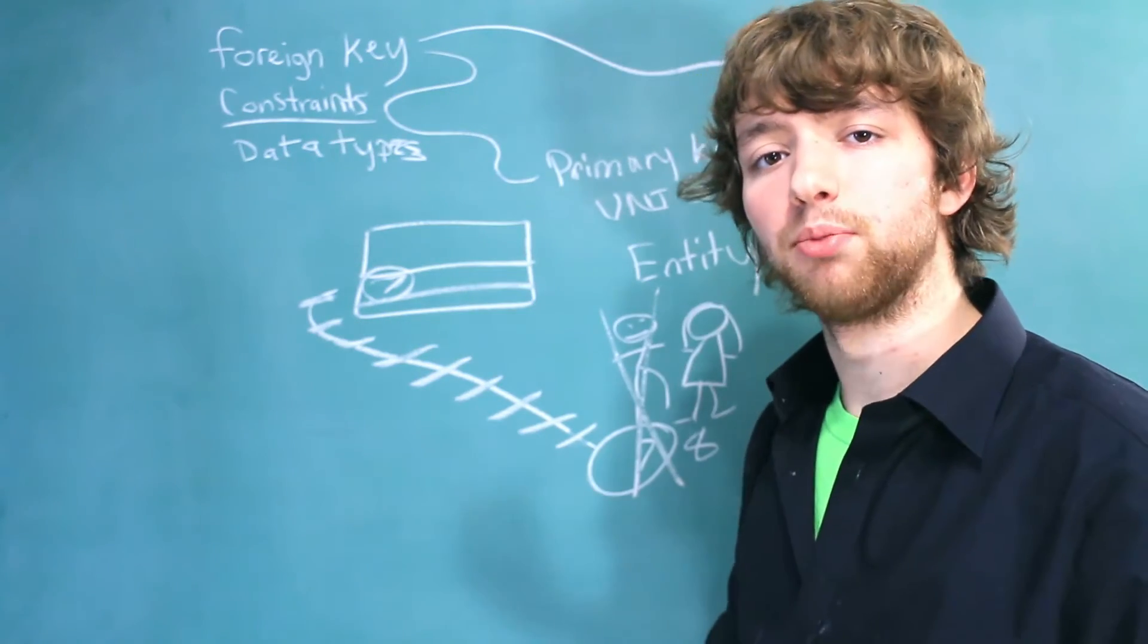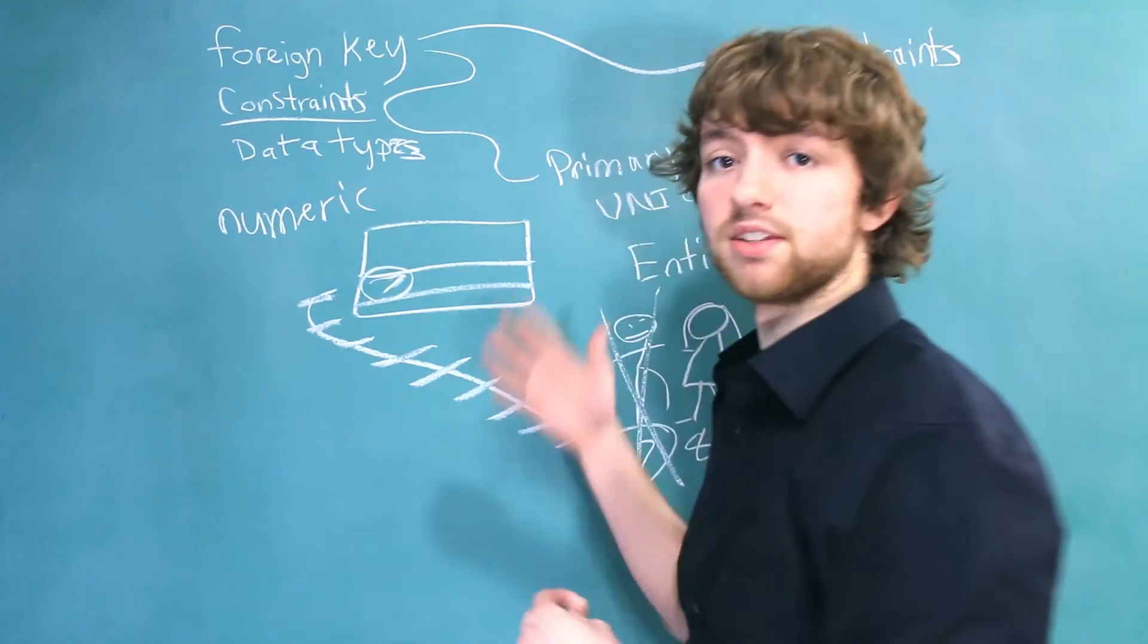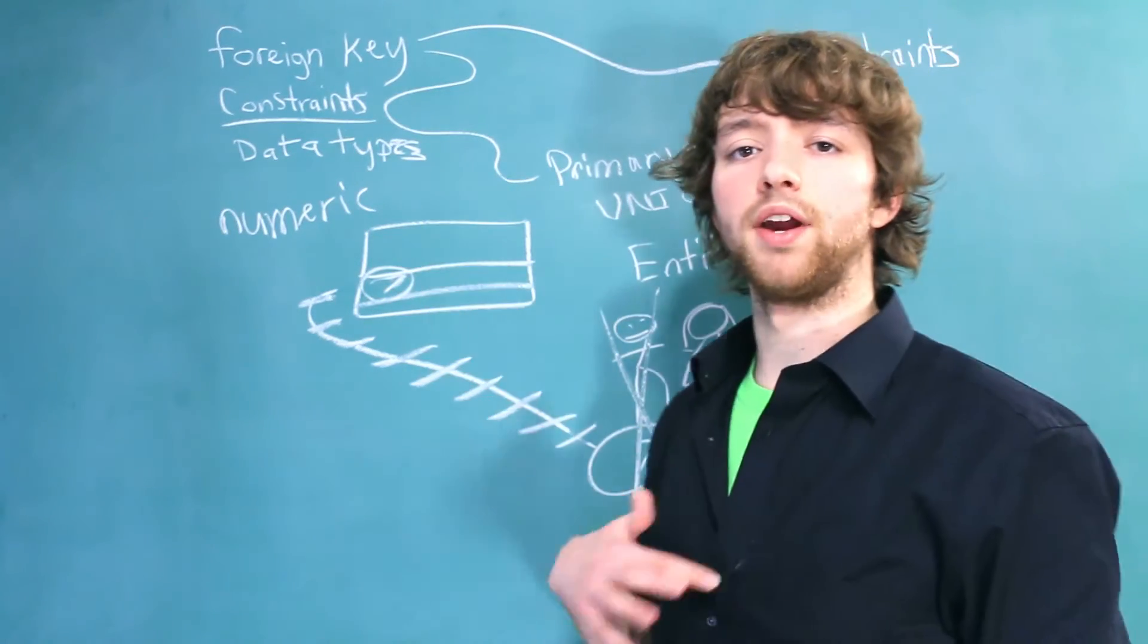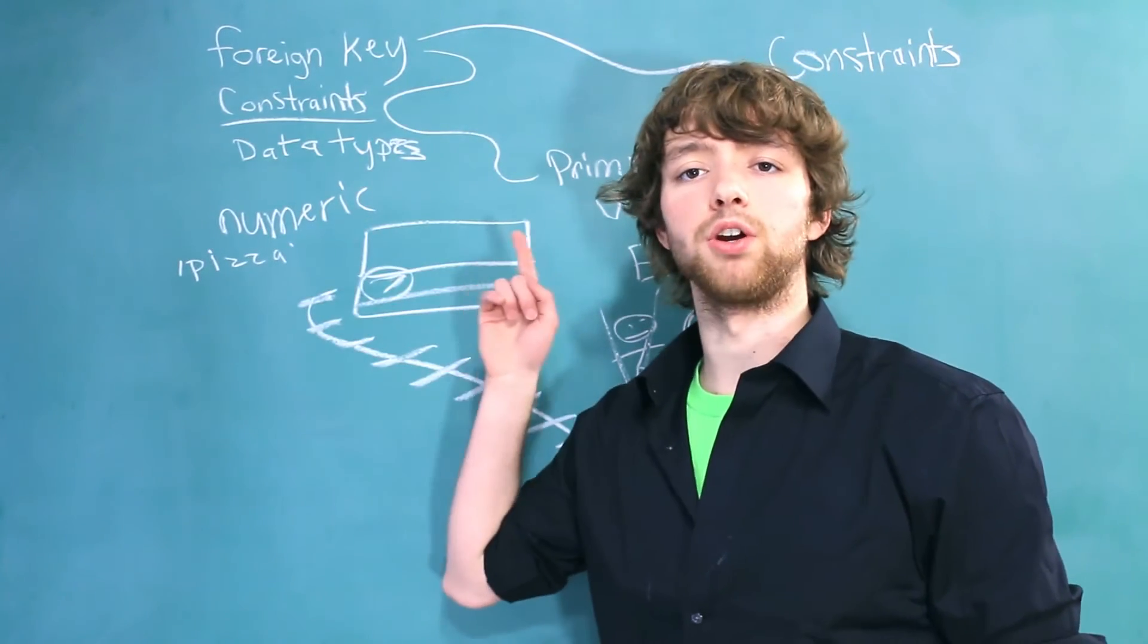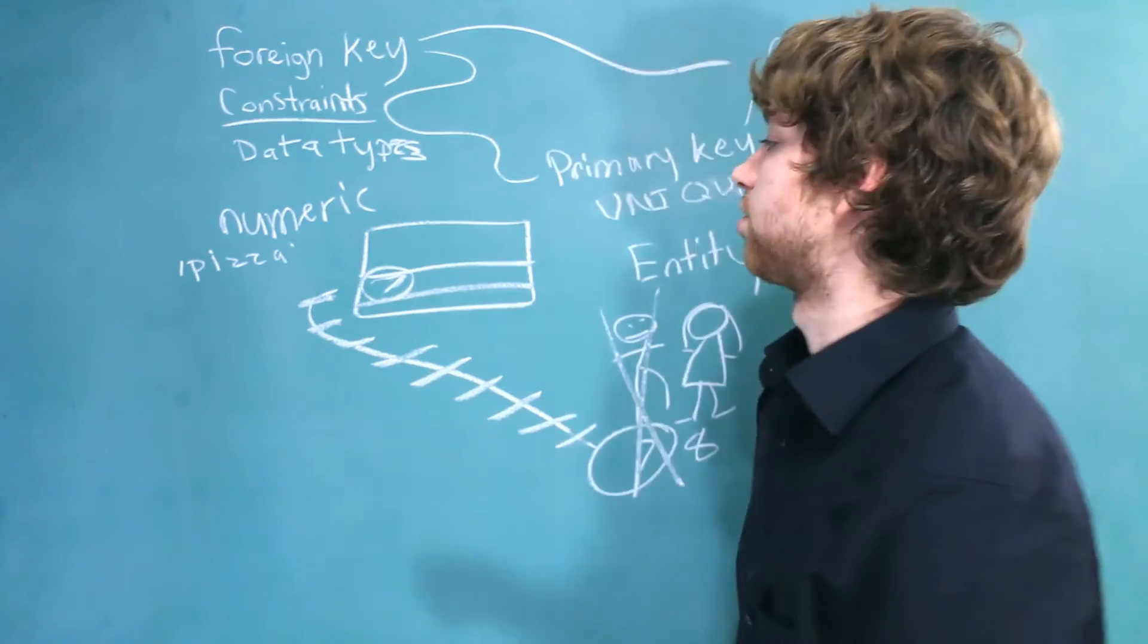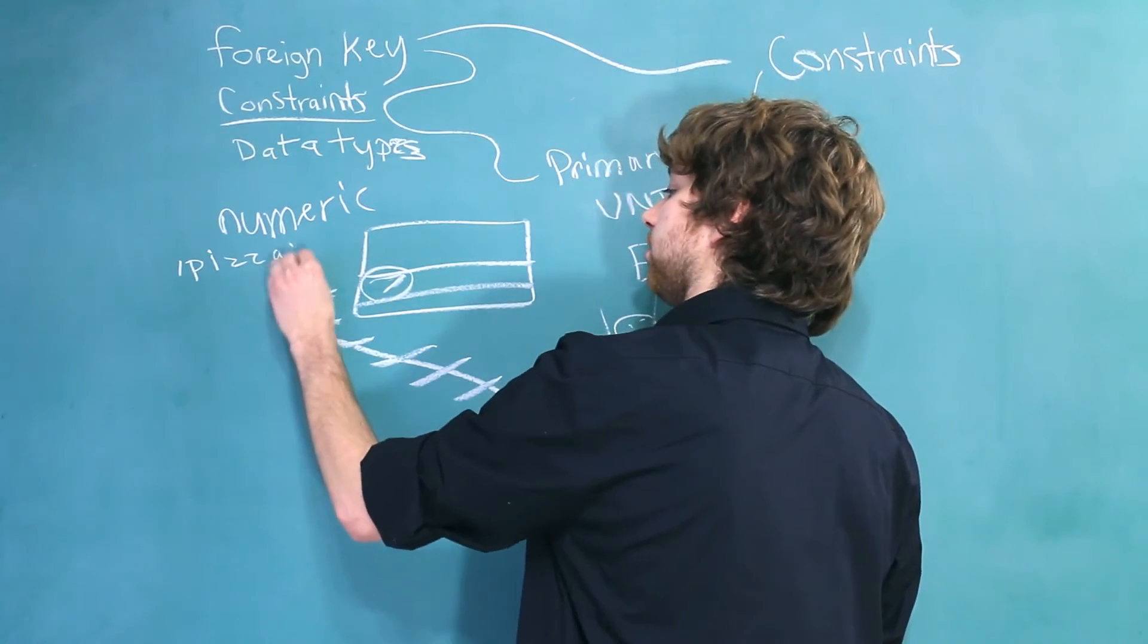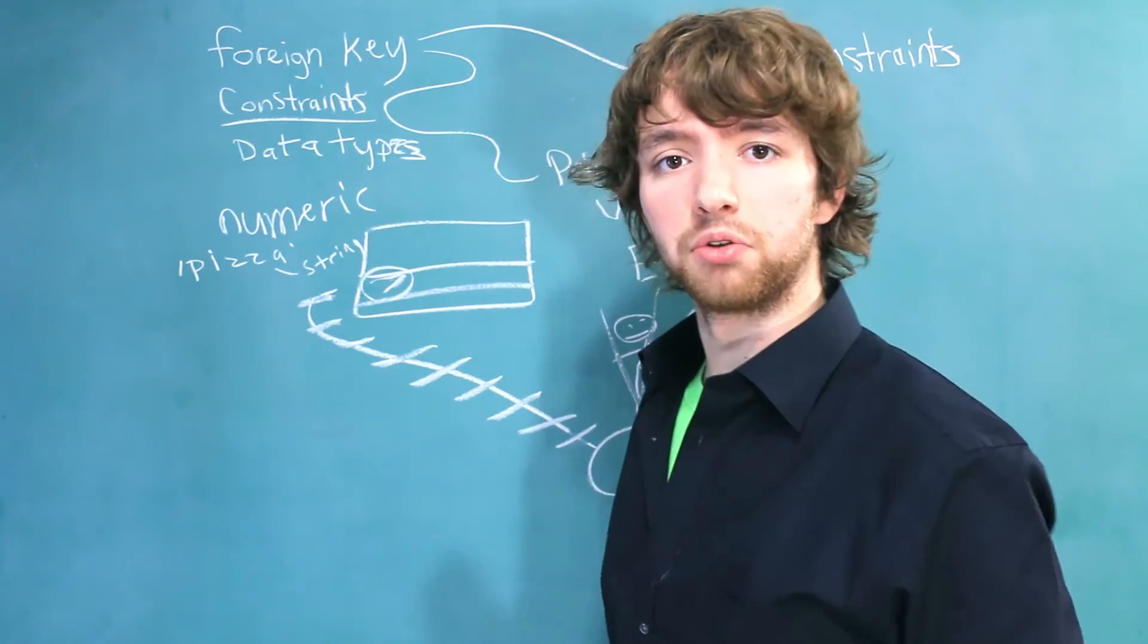One area where this is important is if we have a numeric column. That means numbers, and we try to store a string in there, that's not going to work. And by that not working, we are taking another step to protecting our data integrity. So this here would be a string value, and we are trying to store that in a numeric column. That's not going to work.